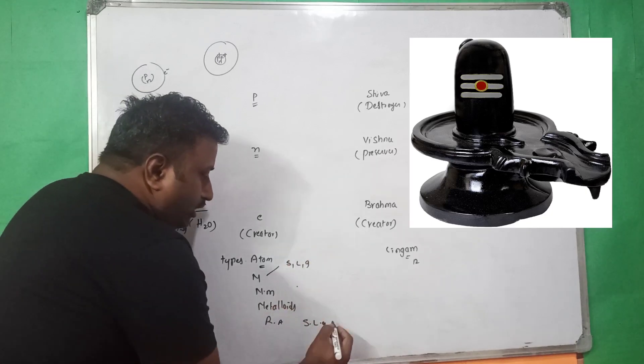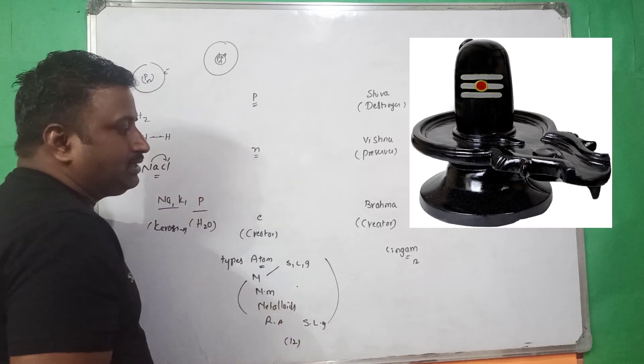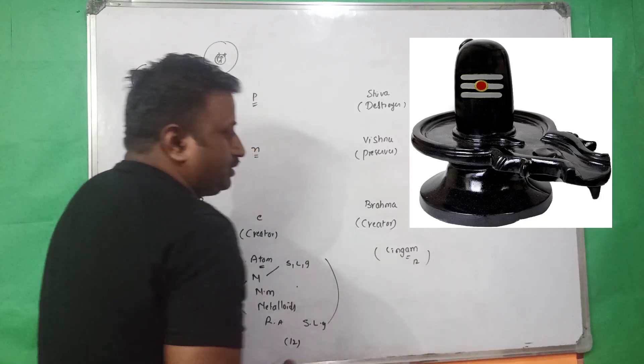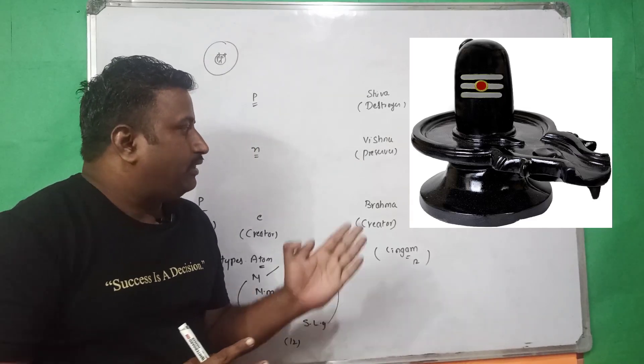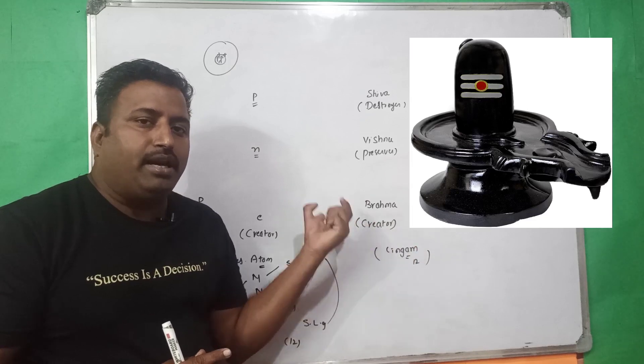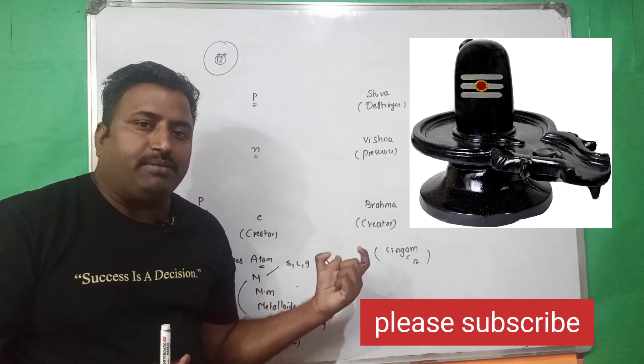So, here all together we can get 12 states with different metals. Here we have 12 Lingams. Now, here we can clearly understand the structure of a Lingam is similar to structure of atom and types of Lingams are different types of atoms.